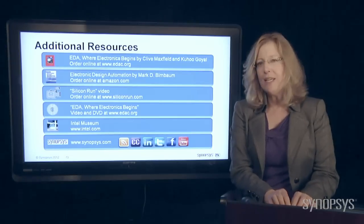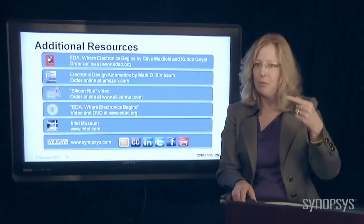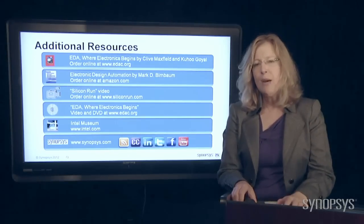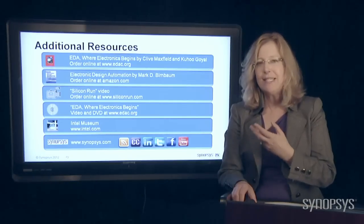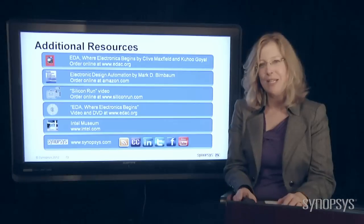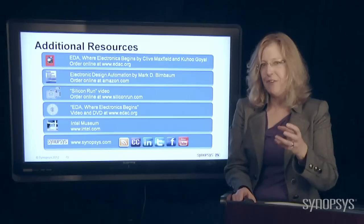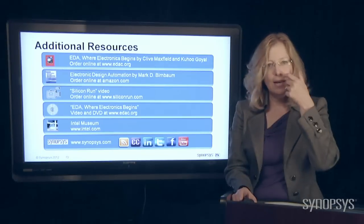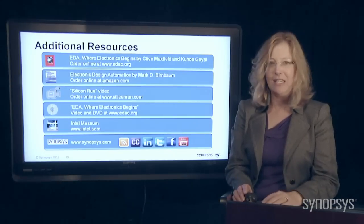There's a video called Silicon Run that I've seen several times, and it's fascinating. It's all about the manufacturing process. It's quite an expensive video. It's used for training purposes. But if you work at a big company and they happen to have this in their library, it's definitely interesting. You can see all the machinery and all the steps that go into manufacturing the chips. And if you'd like a short video, it's like 15 minutes, you can also from edac.org get a little overview of all of this called EDA Where Electronics Begins on DVD.